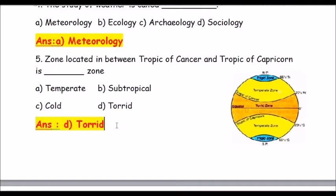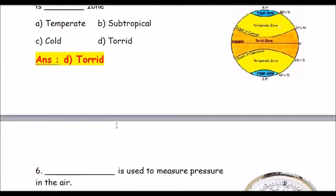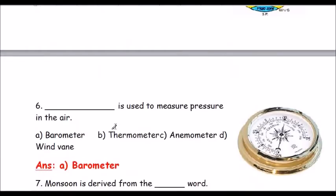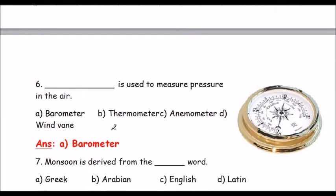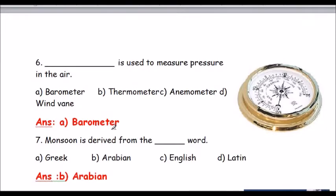Question number 6: What is used to measure pressure in the air? Options are a) barometer, b) thermometer, c) anemometer, and d) wind vane. The correct answer is barometer. A barometer is used to measure the pressure in the air.